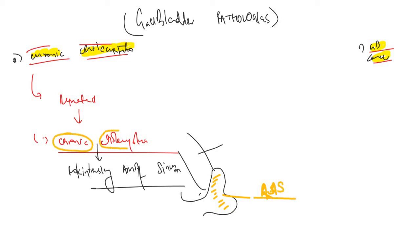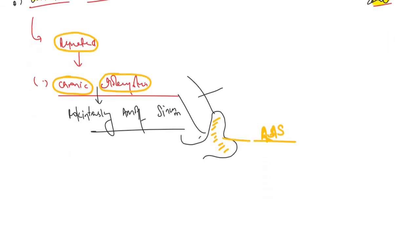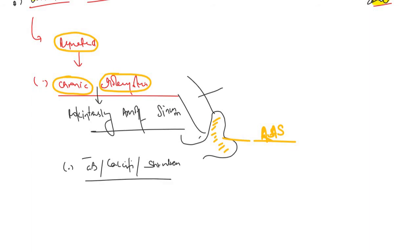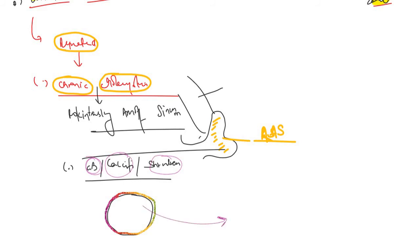Eventually with chronic cholecystitis, there will occur fibrosis of the gallbladder, calcification in the wall of the gallbladder, and the gallbladder will be shrunken. This shrunken, fibrotic, and calcified gallbladder is called the porcelain gallbladder. Porcelain gallbladder is a sequela or complication of chronic cholecystitis in which the gallbladder is calcified, shrunken, and fibrotic. As a result, there is an increased risk for gallbladder carcinoma.